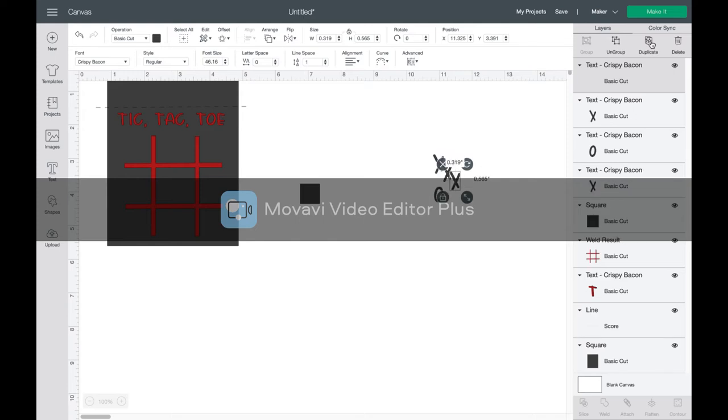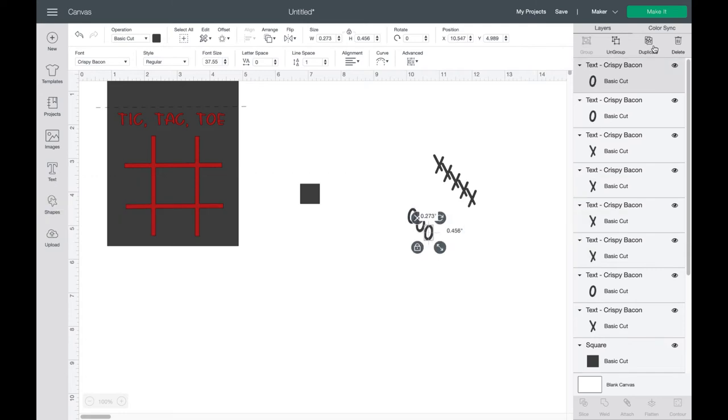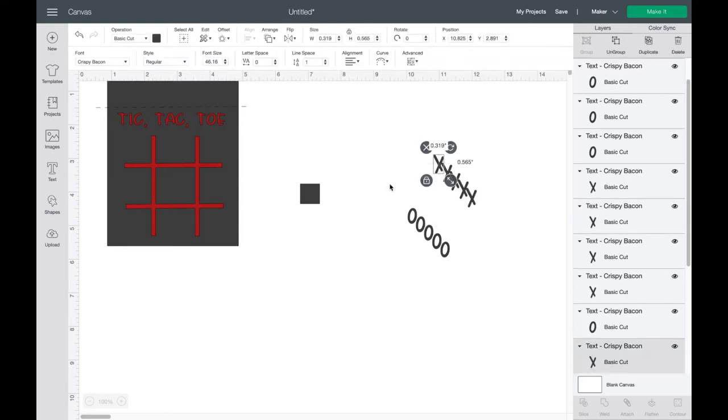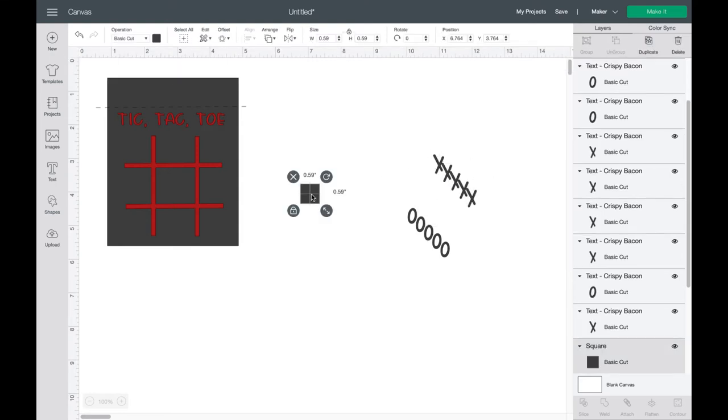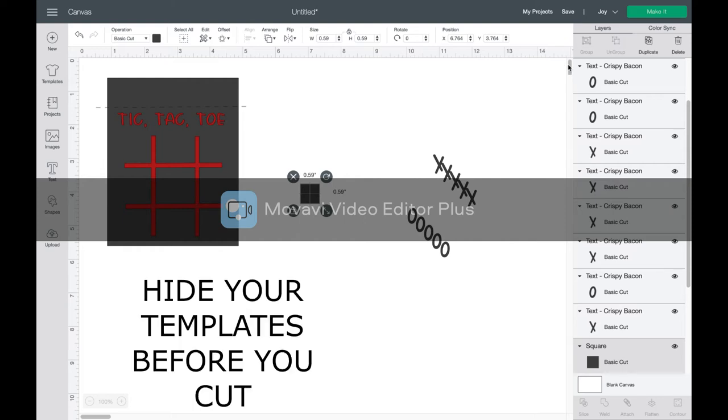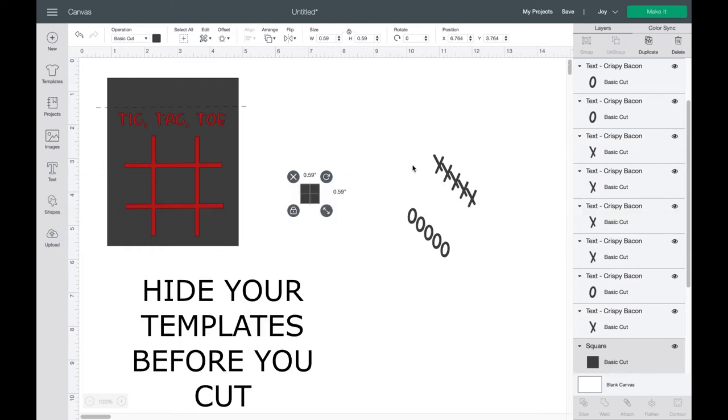Now you only actually need nine to play the game, but it's always good to have a little extra. And like I said at the end, if you are putting these on your site or in your business, make two - so have six X's and six O's, so in case one gets lost or two gets lost they always have the exact amount of pieces to play the game. So it's just a little extra incentive for your customer. But at any rate, once that's all done you just hit make it and you're ready to cut.